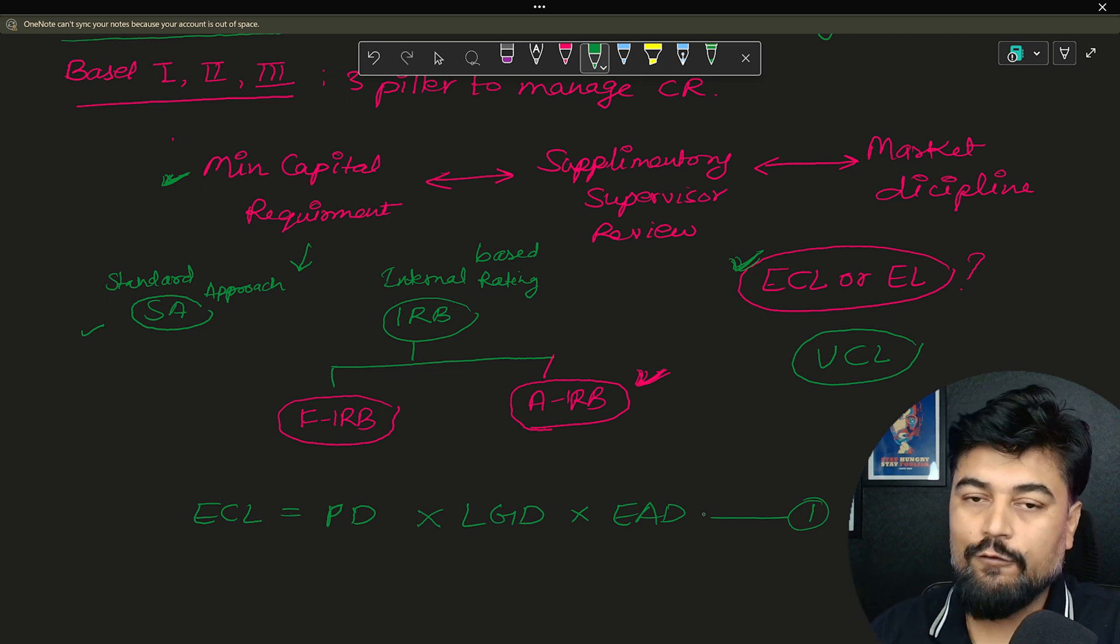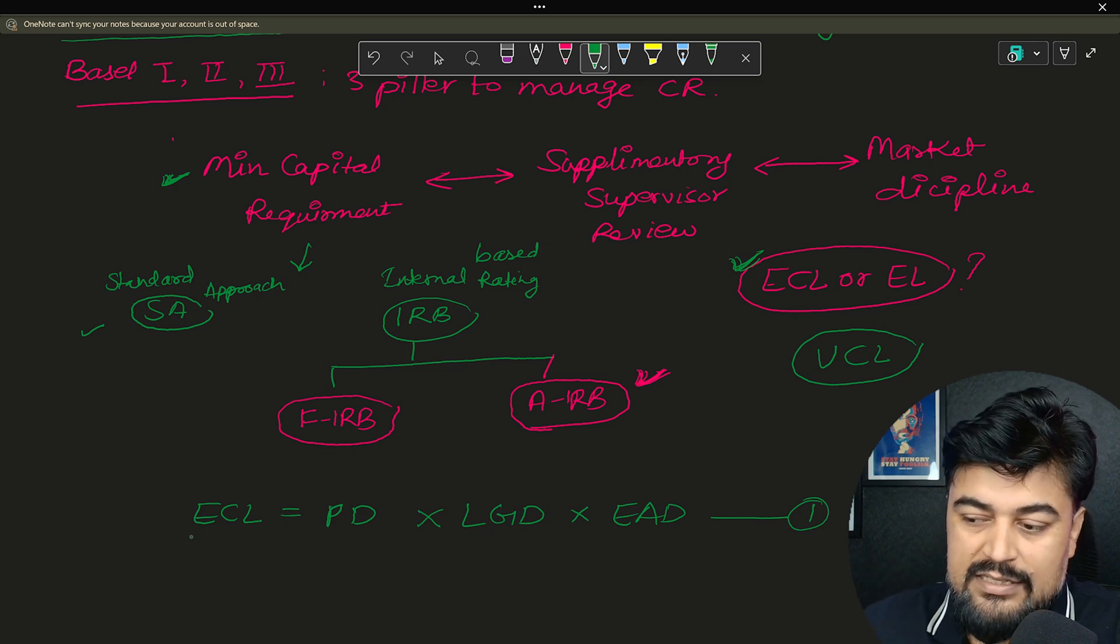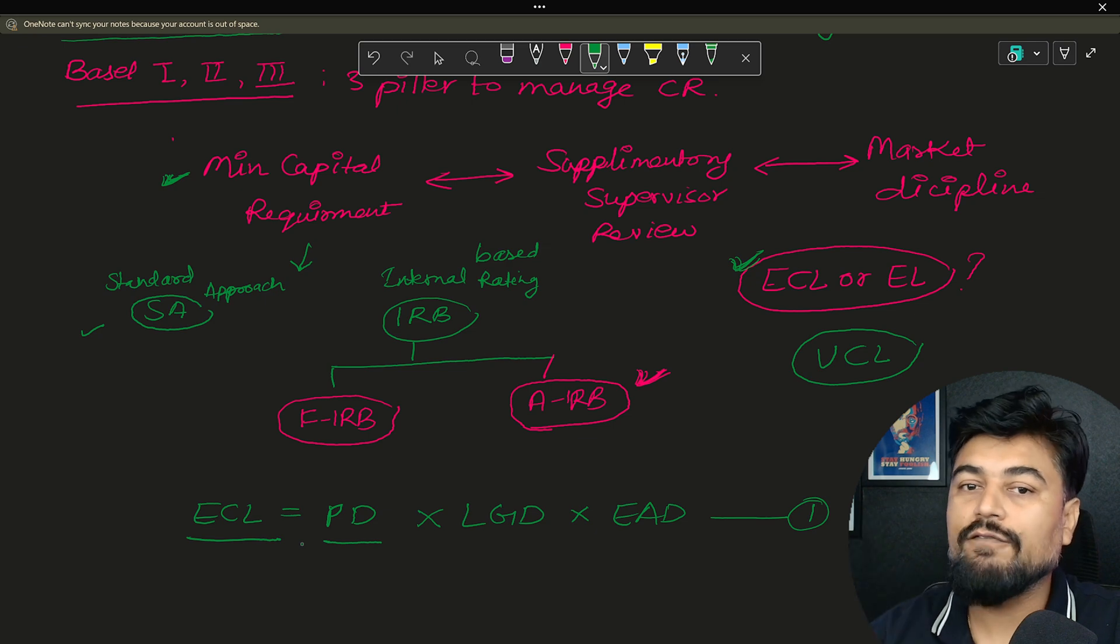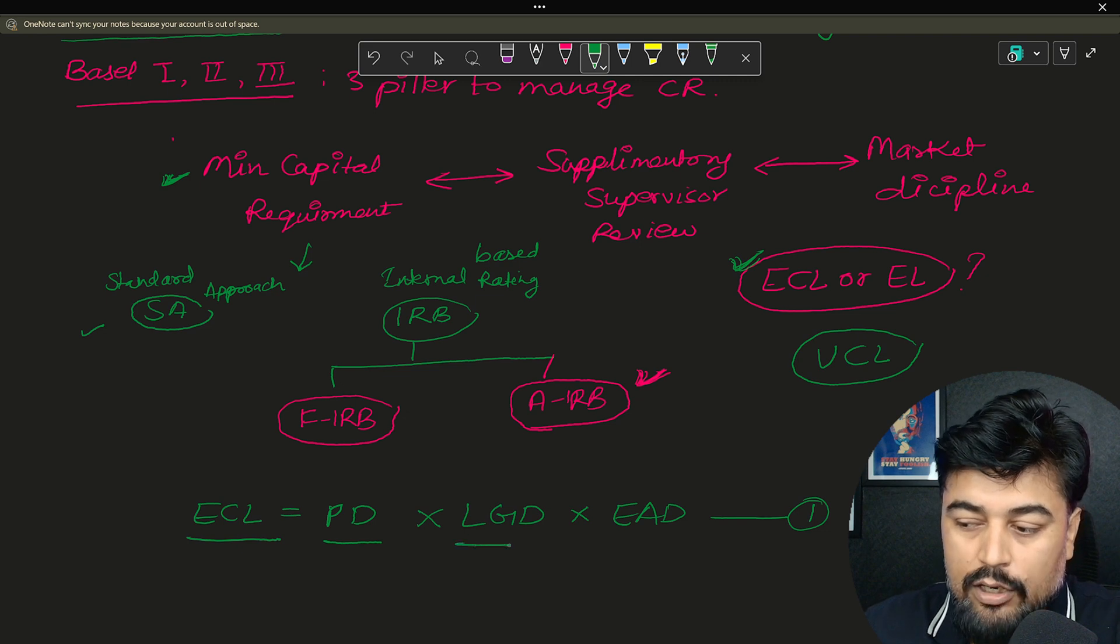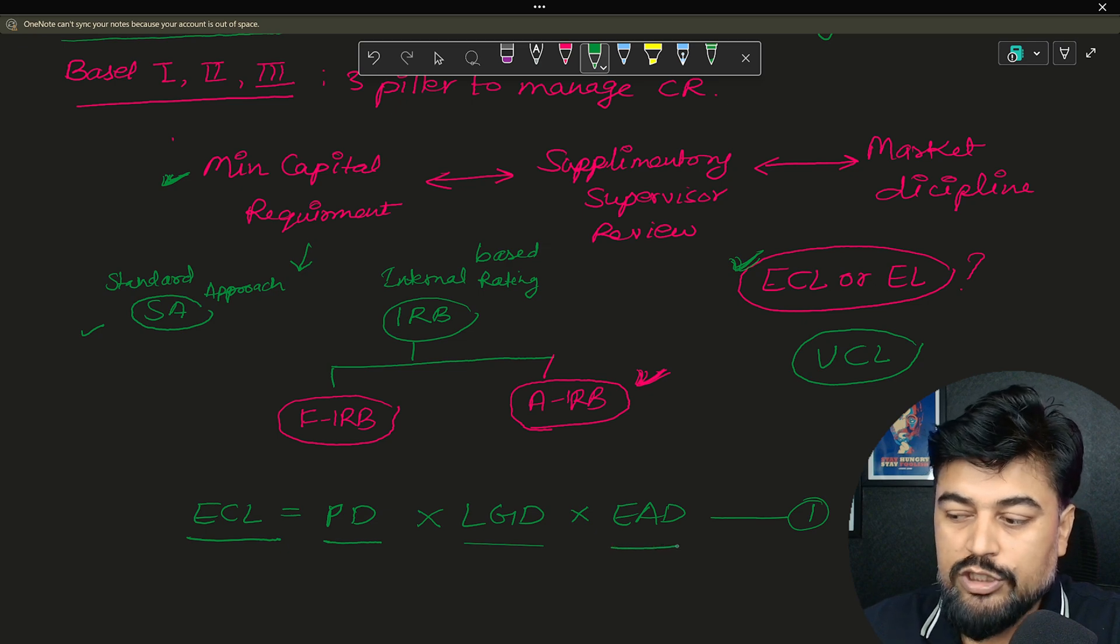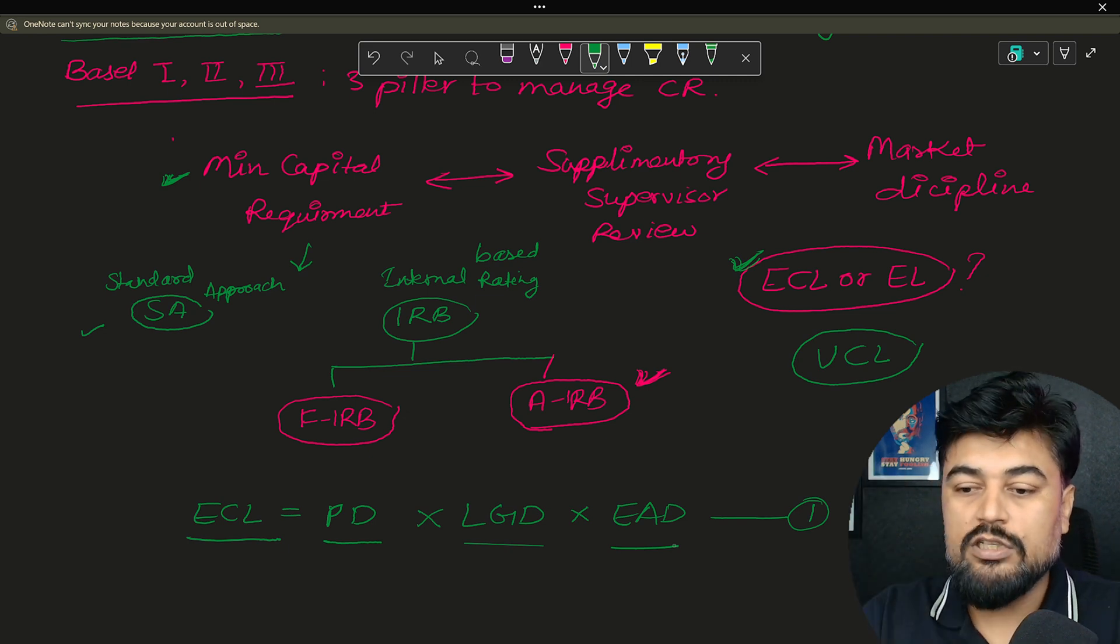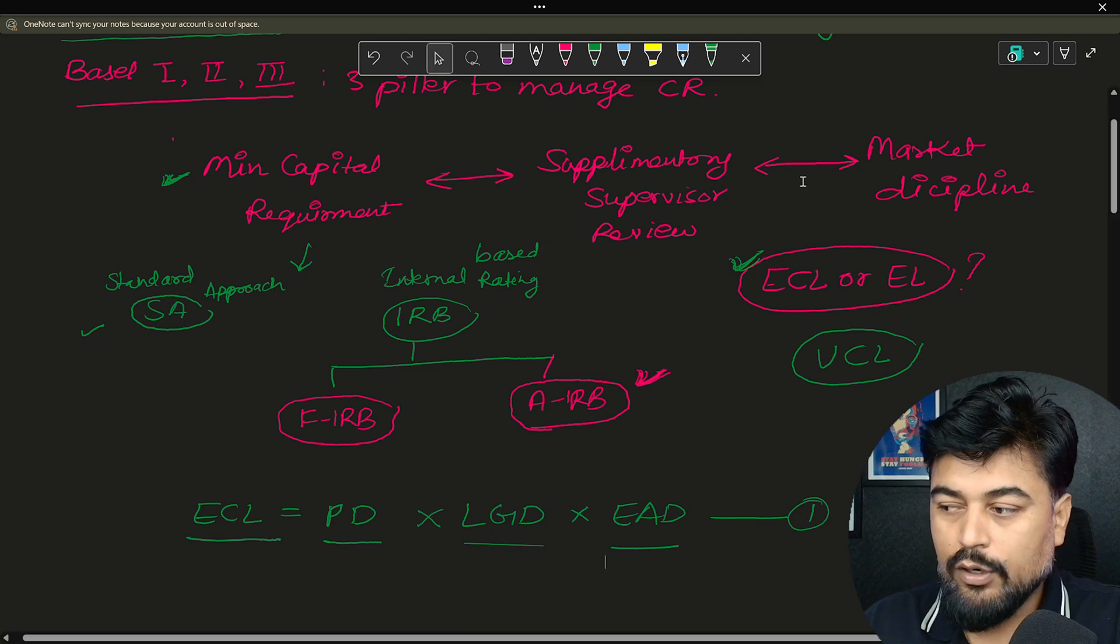Now the formula of ECL is PD - that is probability of default - multiply by LGD. LGD stands for loss given by default, multiply by EAD - that is exposure at default. Now just remember the terms. Later in the next video you will understand all the full end-to-end with examples. So ECL stands for expected credit loss. Probability of default - what is the probability that a borrower will default is known as PD. What is the loss given by the default at a particular point of time is known as LGD. Then exposure at default - what is the total exposure which is there on the default verge, that is known as EAD. On this note, I will conclude